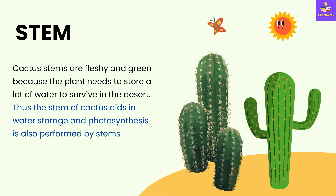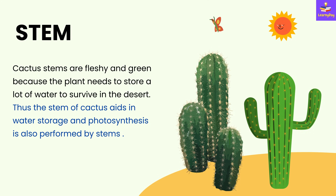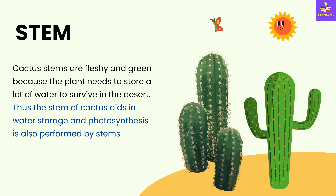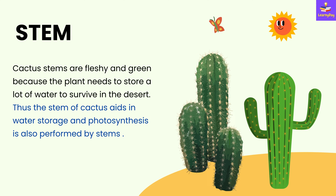Next comes the stem of cactus plant. Cactus stems are fleshy and green because the plant needs to store a lot of water to survive in the desert. Thus, the stem of cactus aids in water storage, and photosynthesis is also performed by the stems.